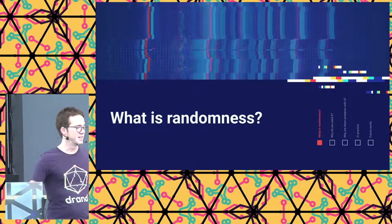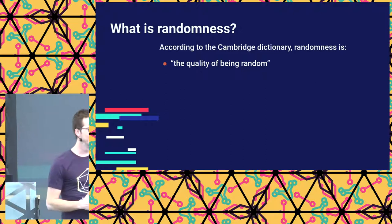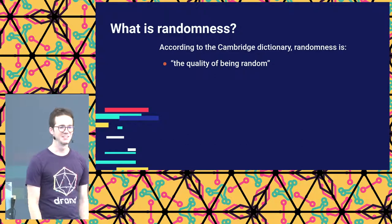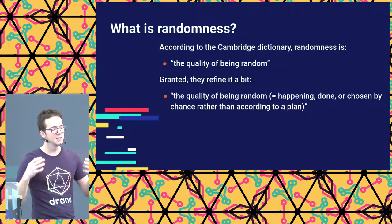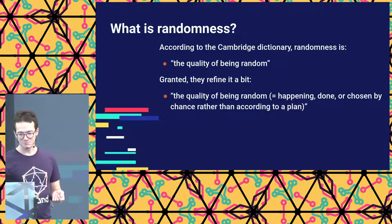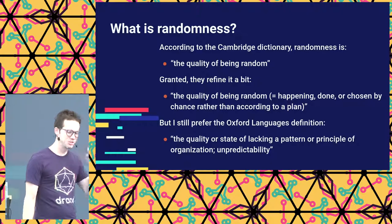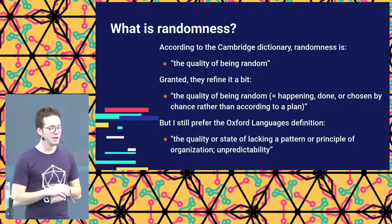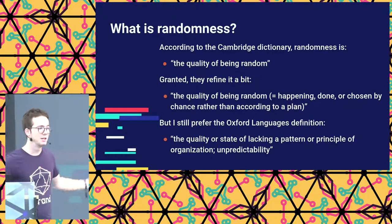So, what is randomness? According to the Cambridge dictionary, randomness is the quality of being random — happening, done, or chosen by chance rather than according to a plan. If you look at other dictionaries, such as Oxford, the definition is the quality or state of lacking a pattern. And that notion of lacking a pattern is super important for randomness, and we'll see why in a minute.